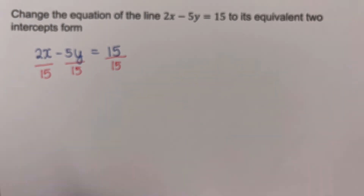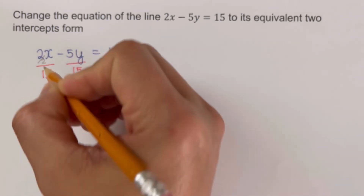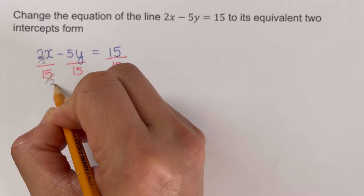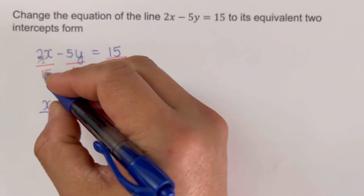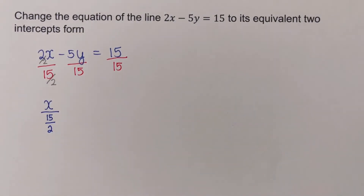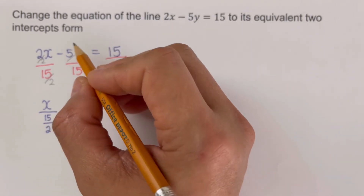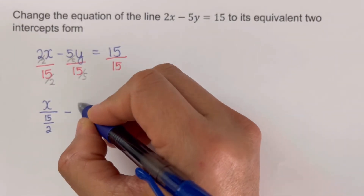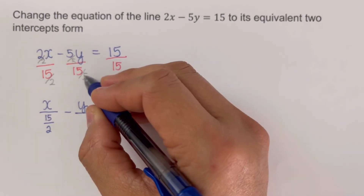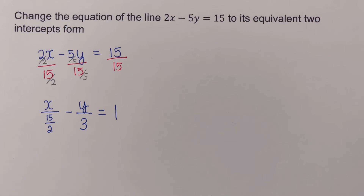To reduce to lowest terms, the coefficient of x in the numerator should be one. So we divide the numerator by 2 and the denominator by 2 as well — 2/2 = 1, giving us x over (15/2). For the y term, since we want the coefficient of y to be one, we divide by 5: 5/5 = 1, giving y over (15/5) = y over 3. And 15/15 = 1.